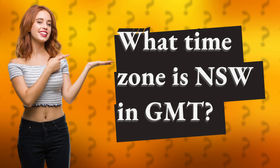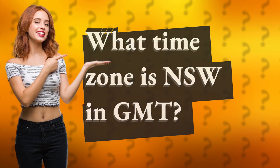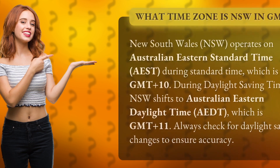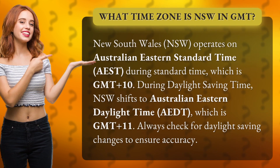What time zone is NSW in GMT? New South Wales (NSW) operates on Australian Eastern Standard Time, AEST, during Standard Time, which is GMT+10.